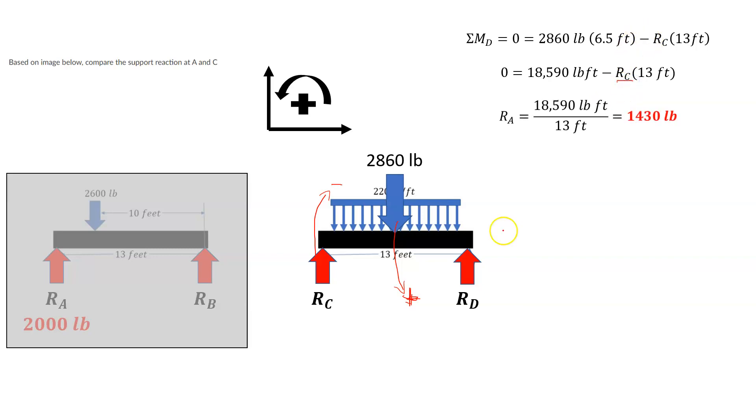Now we can just solve for R sub C, and we end up with 1,430 pounds for the reaction at C, and it looks like I have a typo here, that should say reaction at C. Alright, so the reaction at C, 1,430 pounds.